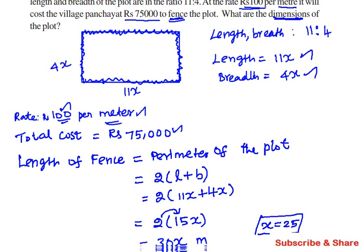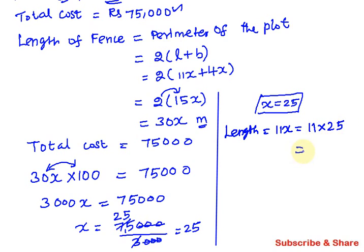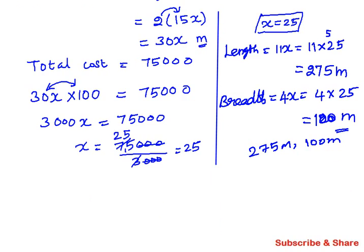Now we find the dimensions. Length = 11x = 11 × 25 = 275 meters. Breadth = 4x = 4 × 25 = 100 meters. So the dimensions of the rectangular plot are 275 meters by 100 meters. That is the answer to this problem.